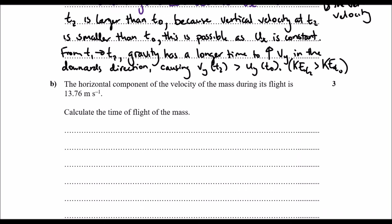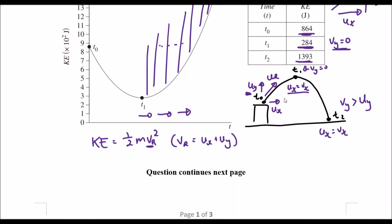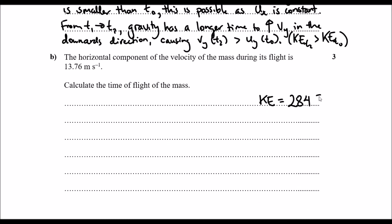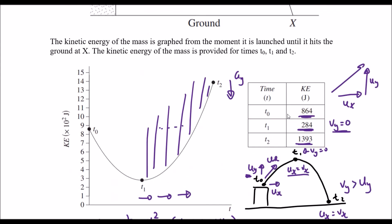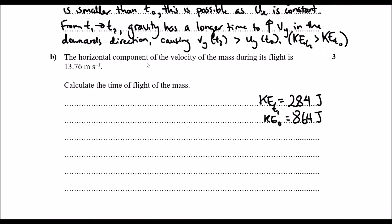Let's move on to question (b). We have the horizontal component of the velocity during flight as 13.76 meters per second. The question says calculate the flight time of the mass. We're going to use t1 as our reference point. The kinetic energy at t1 is 284 joules, and at t0 it was 864 joules. These allow us to calculate the horizontal velocity at the start and work out the total time of flight.